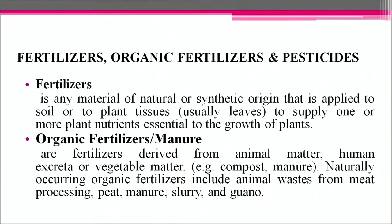Farmers use both organic fertilizers produced from plant and animal waste as well as commercial chemical fertilizers produced from various inorganic compounds. A fertilizer is any material of natural or synthetic origin applied to soil or plant tissues to supply one or more plant nutrients essential to plant growth. Organic fertilizers or manure are derived from animal matter, human excreta or vegetable matter. Naturally occurring organic fertilizers include animal waste from meat processing, peat, manure, slurry and guano.